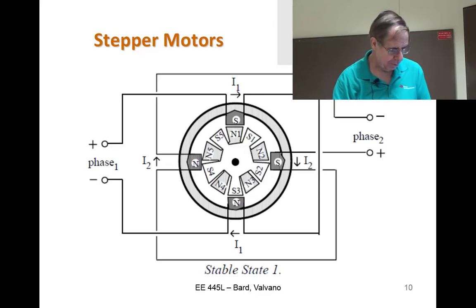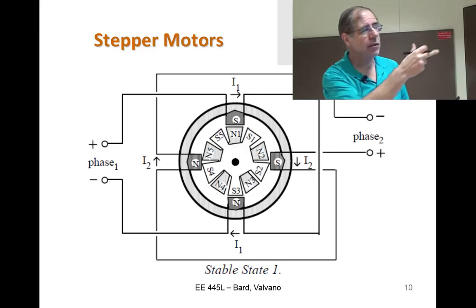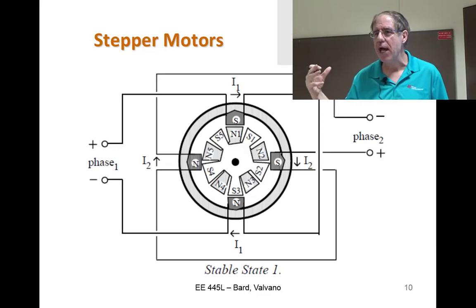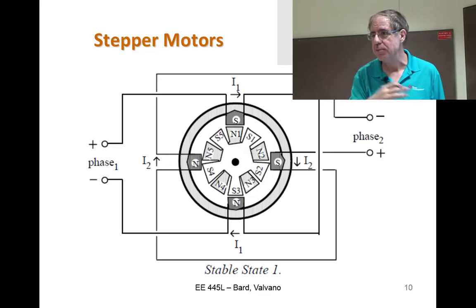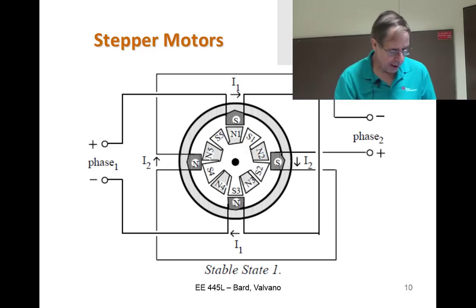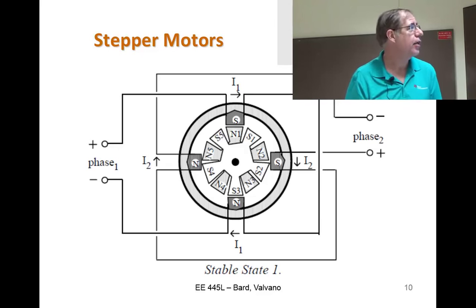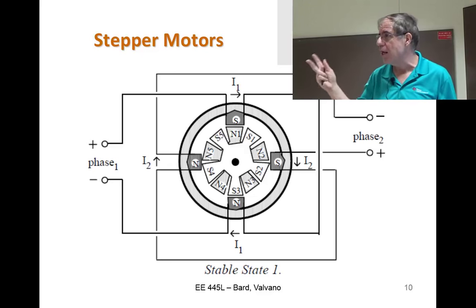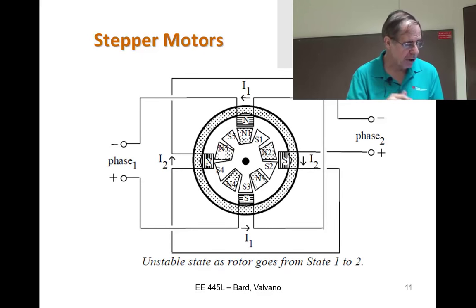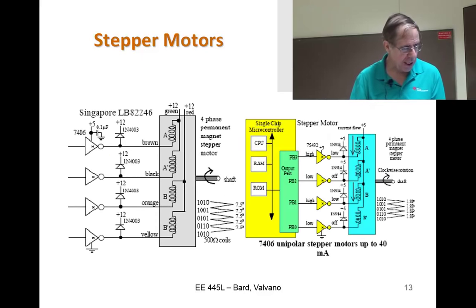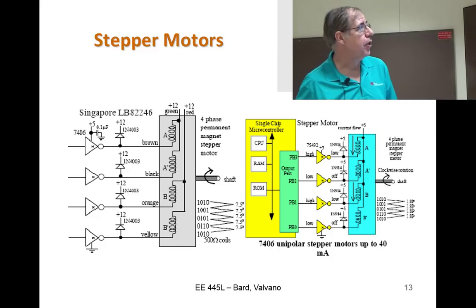We're going to rotate the polarity of the electromagnets. The stepper motor has both electromagnets in the coils and permanent magnets in the rotor. The rotating part has permanent magnets; you drive current through the electromagnets. As you drive current up, down, left, and right, it goes to a stable state, and then flipping one set of coils causes it to rotate to another stable state.